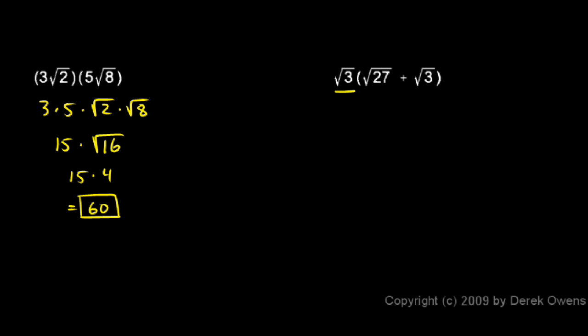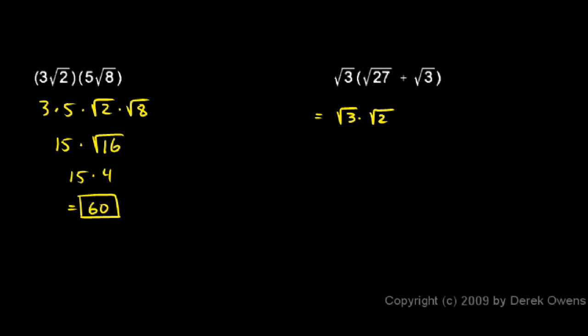Here I have the square root of 3 times the square root of 27 plus the square root of 3. So I have to distribute. The square root of 3 will get multiplied by the square root of 27, and it will get multiplied by the square root of 3. So let's write it like that: I have the square root of 3 times the square root of 27 plus the square root of 3 times the square root of 3.